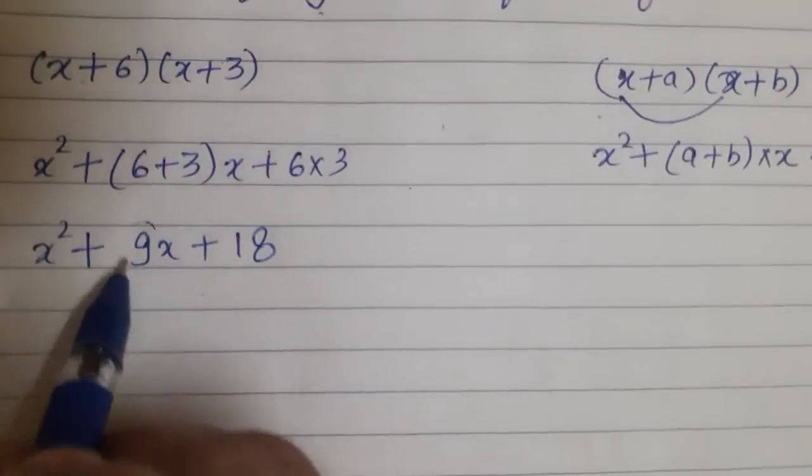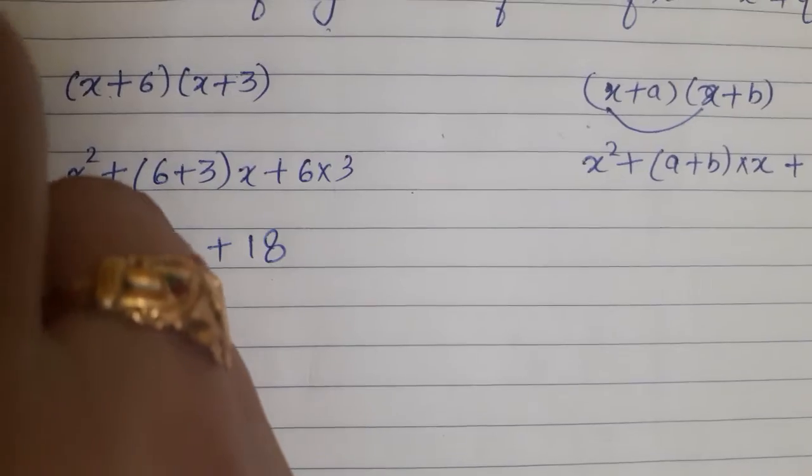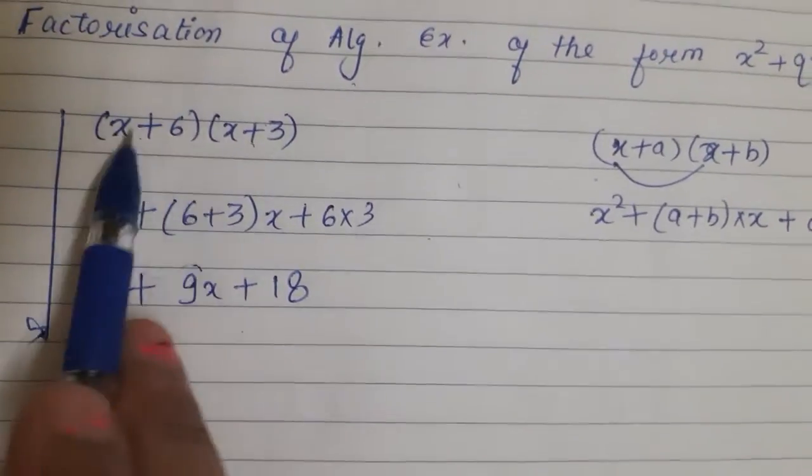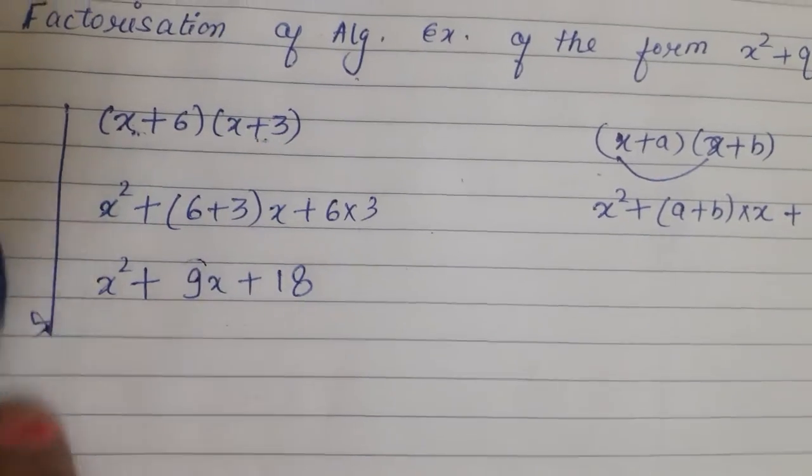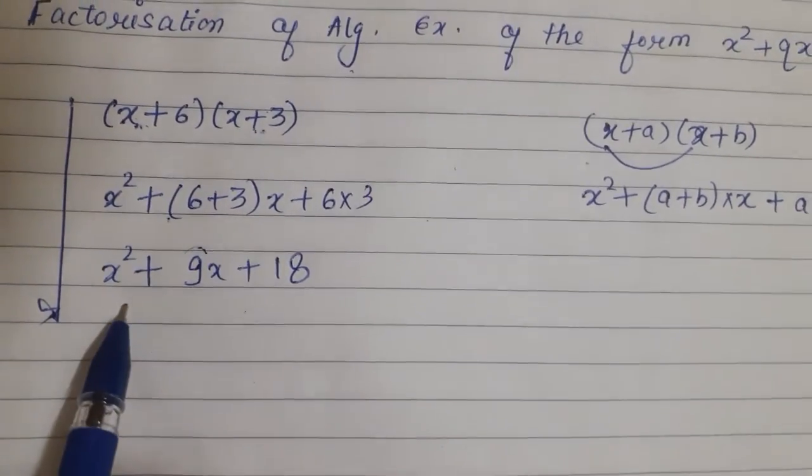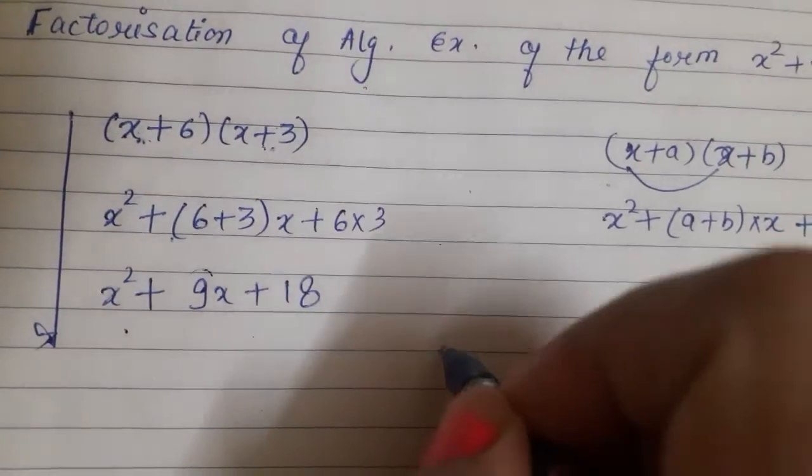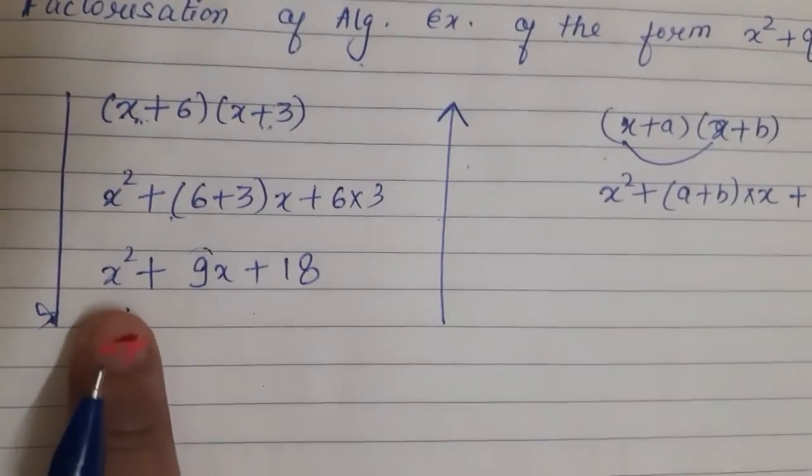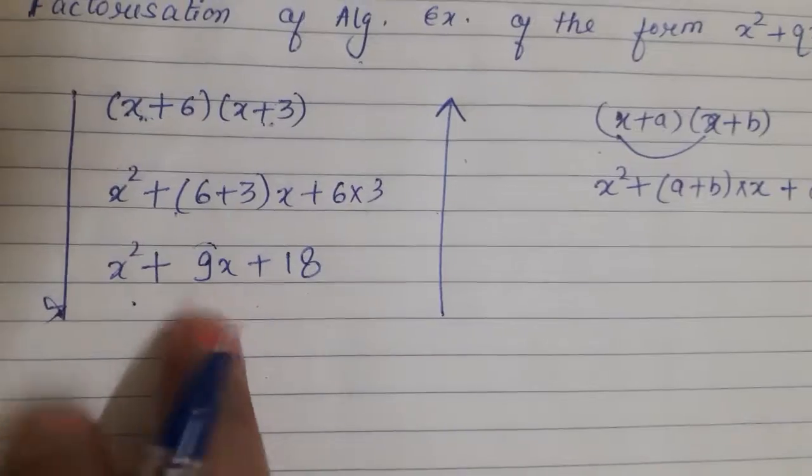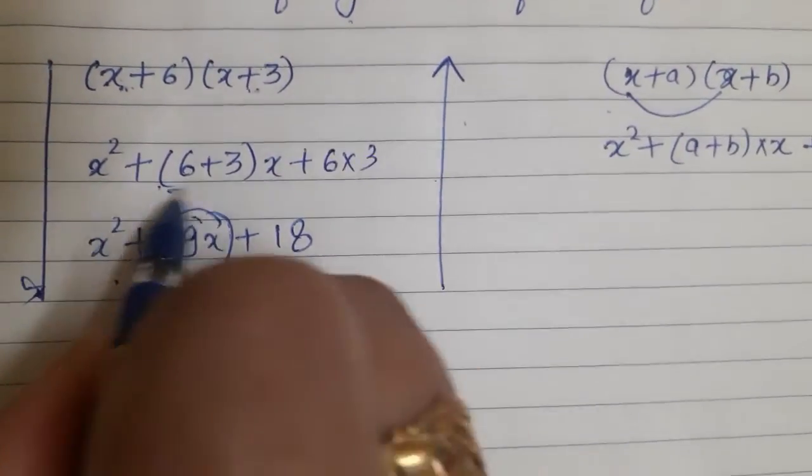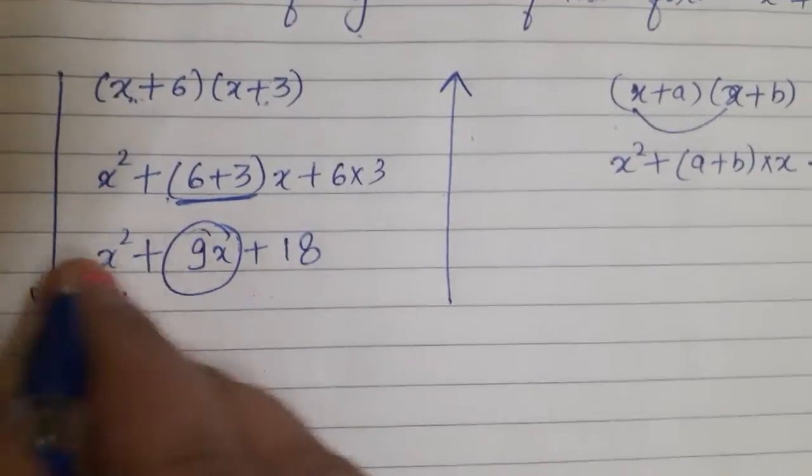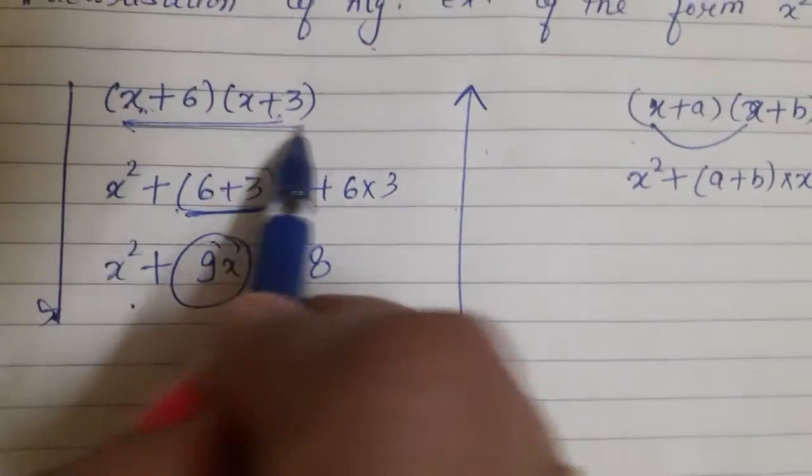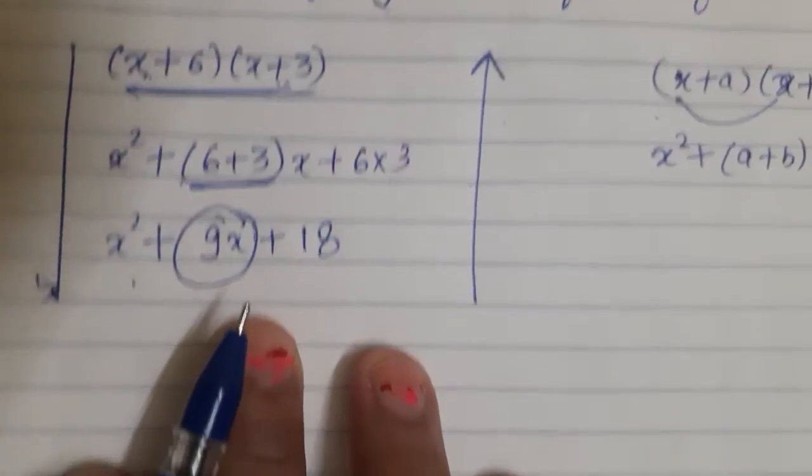So can we break—you have seen if I am going downward direction, means the factors were given, I multiplied the factors and I got the expression. If I will move last step to first, so if the expression is given, we can break the midterm. It can be negative, it can be positive, it depends on the question. And then we can find out the factor of the given expression.